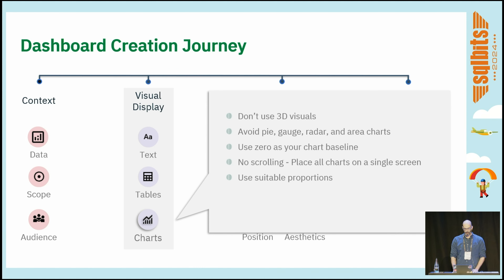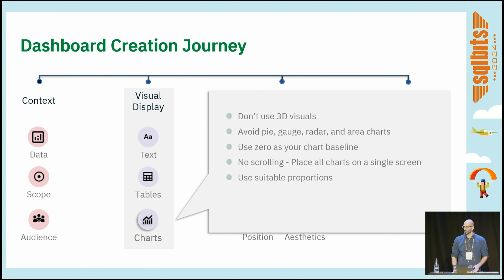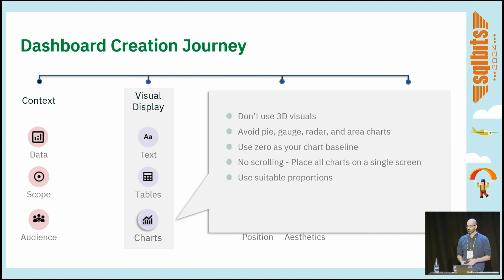Some dos and don'ts. Don't use 3D visuals. For the same reason, avoid pie charts, radar, and area charts — they distort proportions and mislead the end user when reading the charts. We should always use zero as our chart baseline. Furthermore, aim whenever possible for single-pagers — avoid forcing the end user to scroll up and down or left to right. And generally, use suitable proportions.